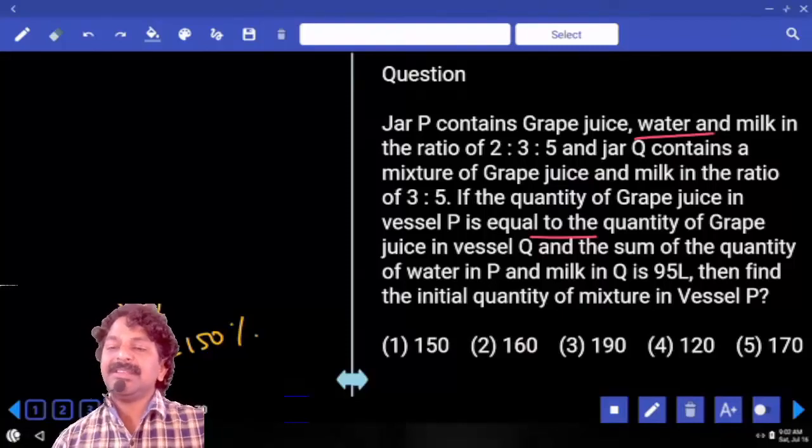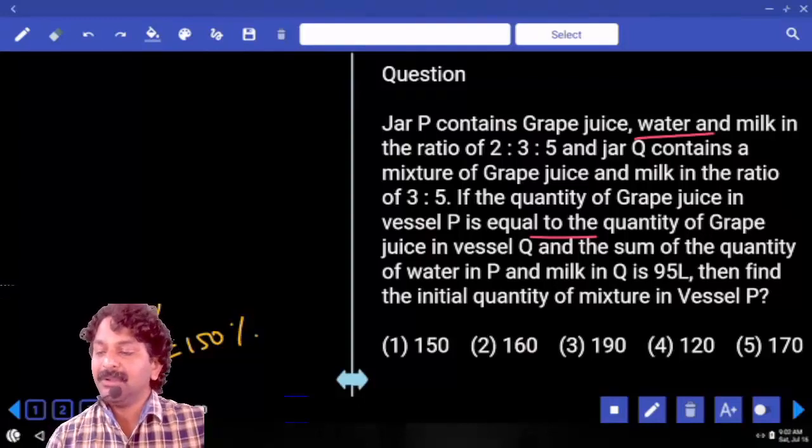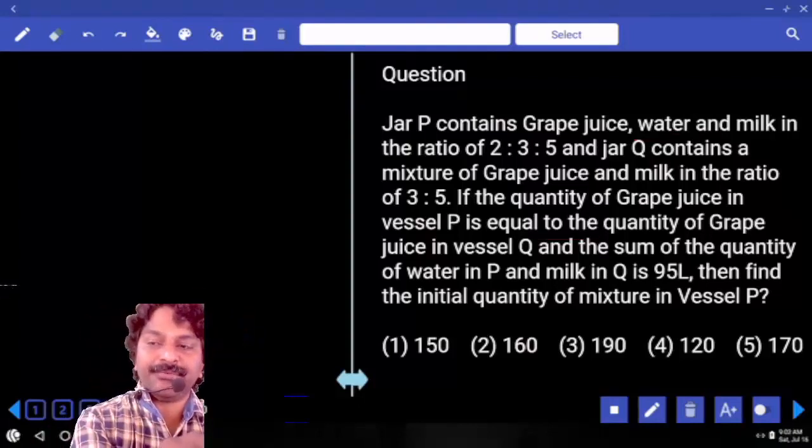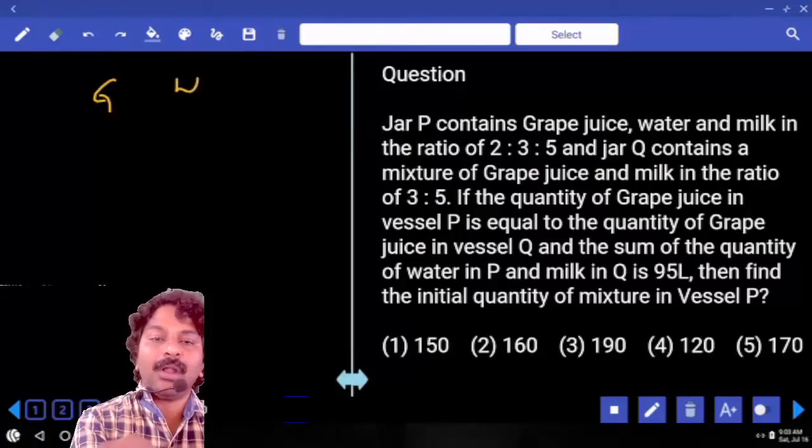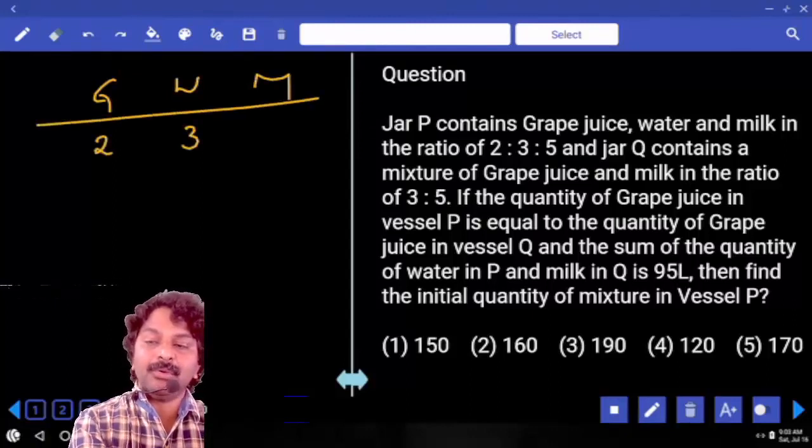Jar P contains grape juice, water and milk in the ratio 2:3:5. Grape, water, milk, there in the ratio 2, 3, 5.